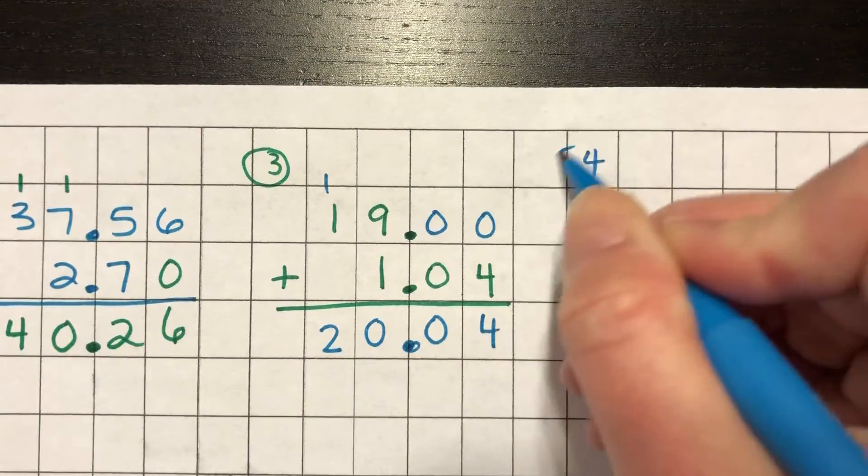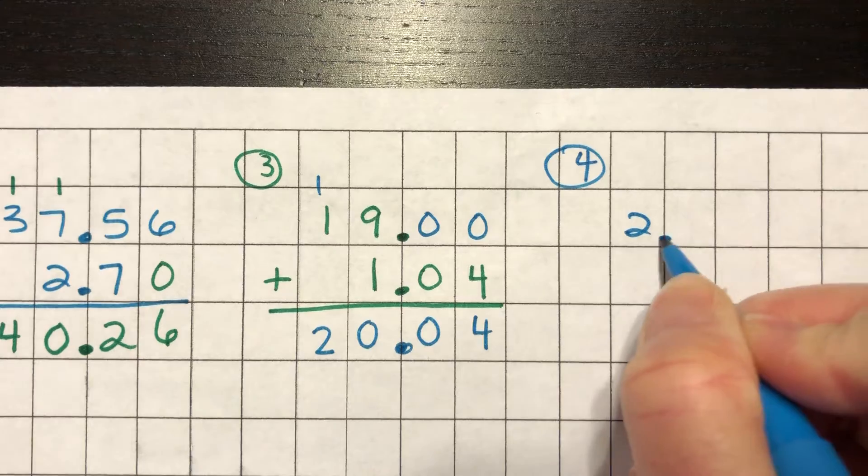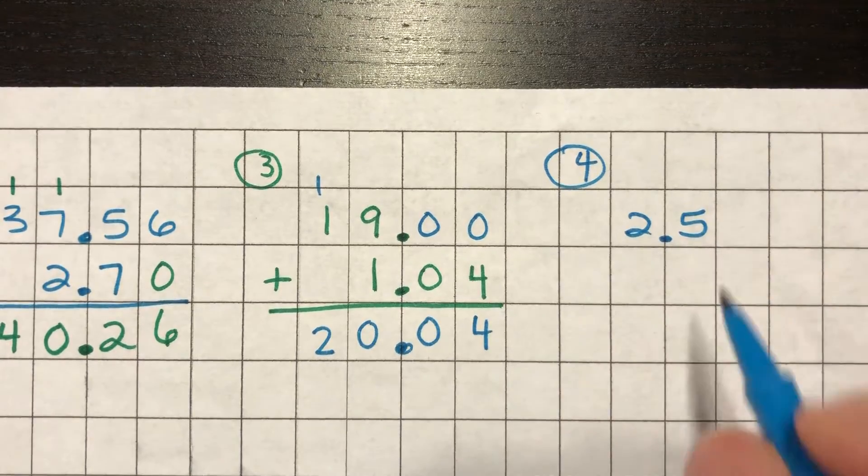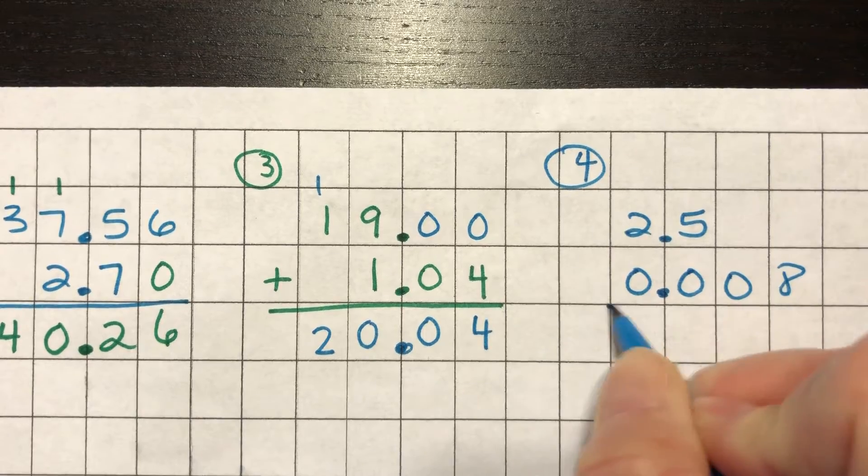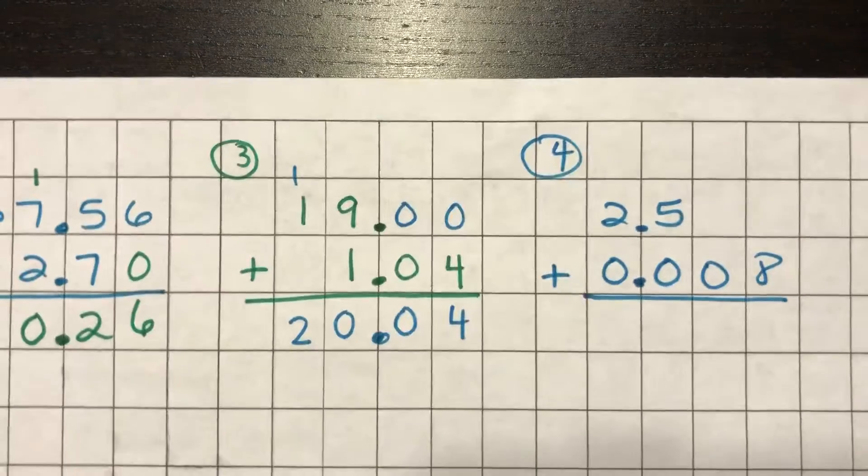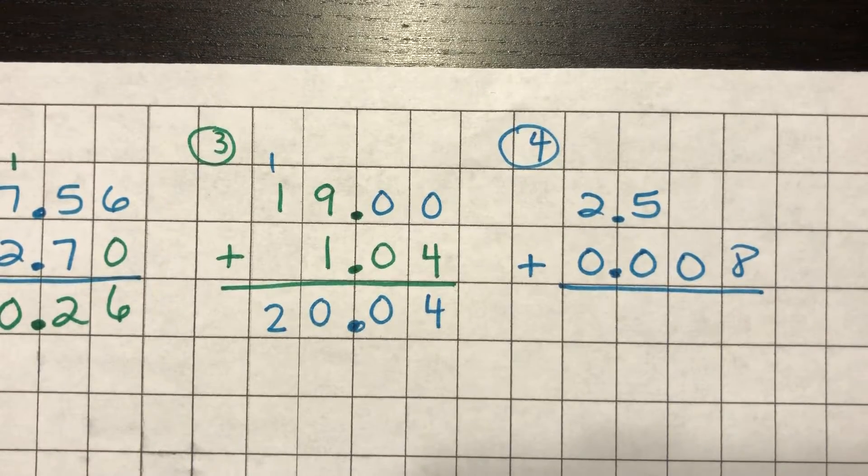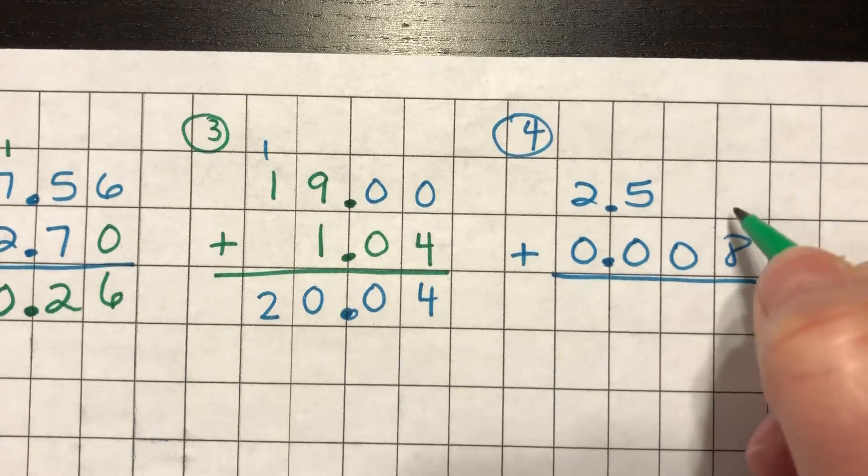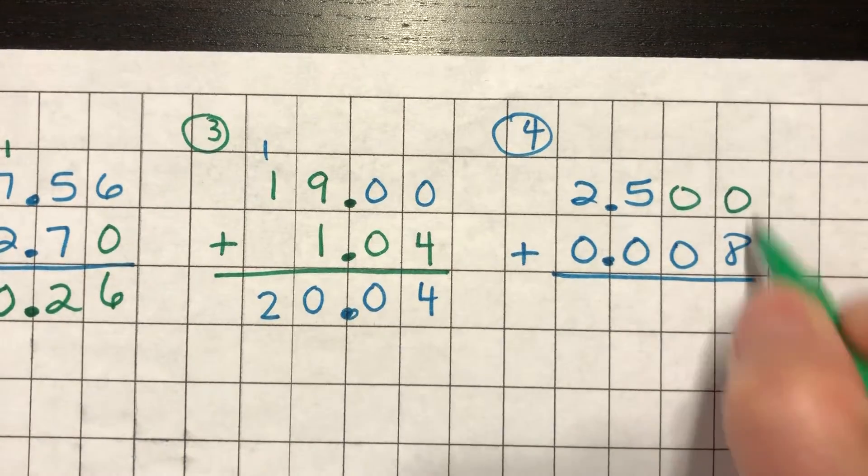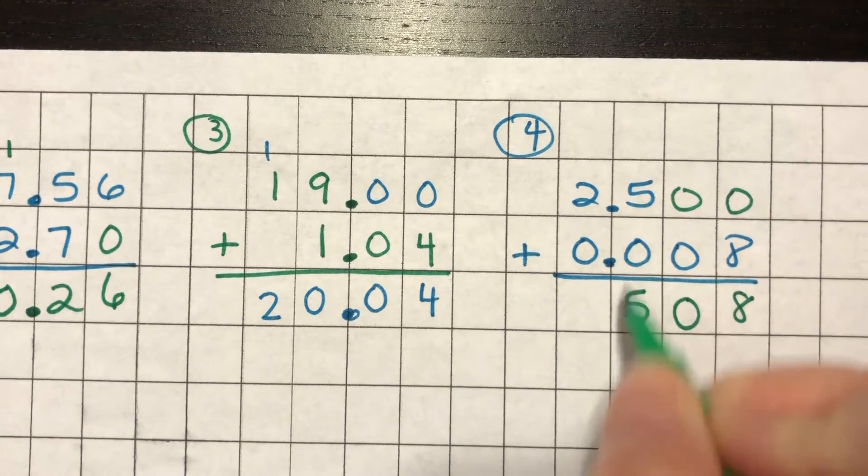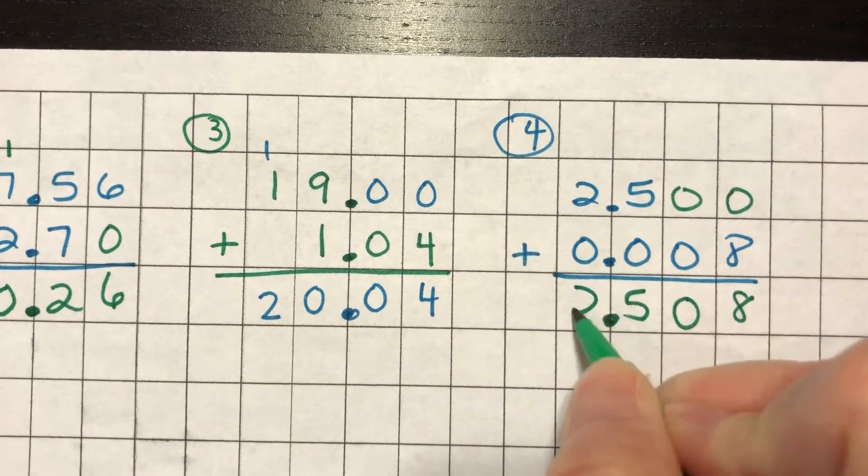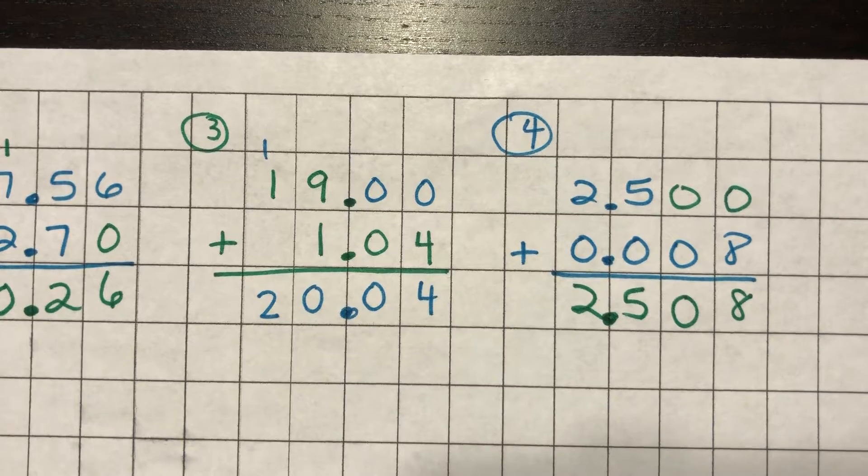So for number four we have 2.5. And then for eight thousandths I should have it lined up like this. This is what it should look like. That's where your decimal point needs to be. So again above these I can put zeros in. Zero plus eight. Zero plus zero. Five plus zero. Keep my decimal point. And two plus zero is two.